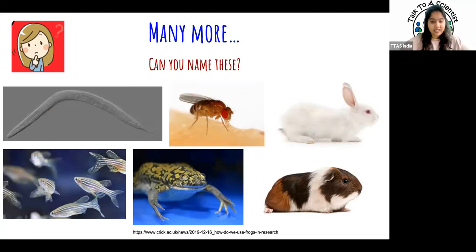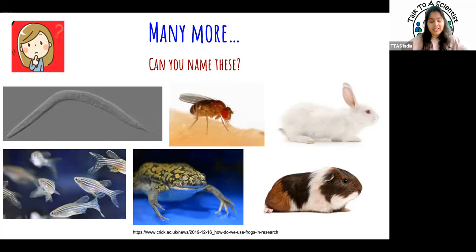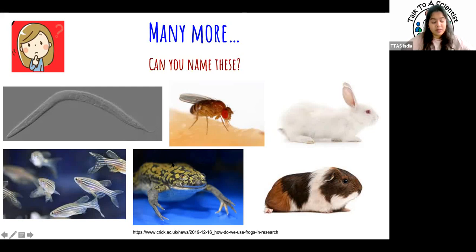Fruit flies — yes, these are flies you've definitely seen around your house. Fruit flies are a very important organism in research, especially for understanding development. Even though they're so tiny, they give us so much information about how organisms develop and grow. What's the one next to the fruit fly? It's actually very, very tiny. It's C. elegans — basically a type of worm.